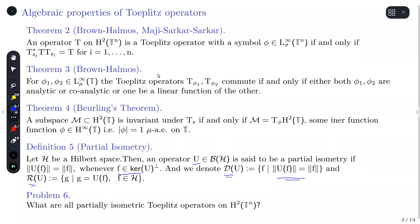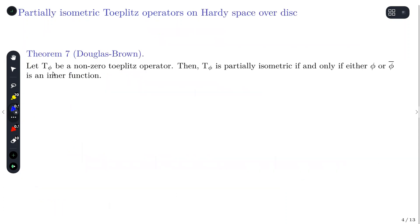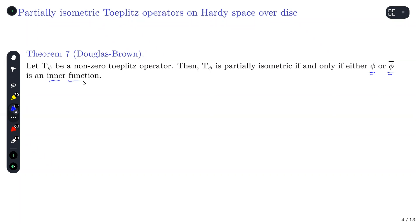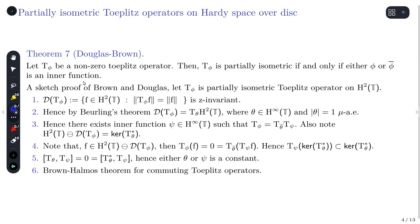The main question I want to discuss is: what are all partial isometric Toeplitz operators? That is, operators satisfying both the Toeplitz identity and the condition that T*T is a projection. This was initially solved by Brown and Douglas for Hardy space over the disk: a nonzero Toeplitz operator is partially isometric if and only if the symbol φ is either inner or its conjugate φ-bar is inner — meaning φ is either analytic or co-analytic.